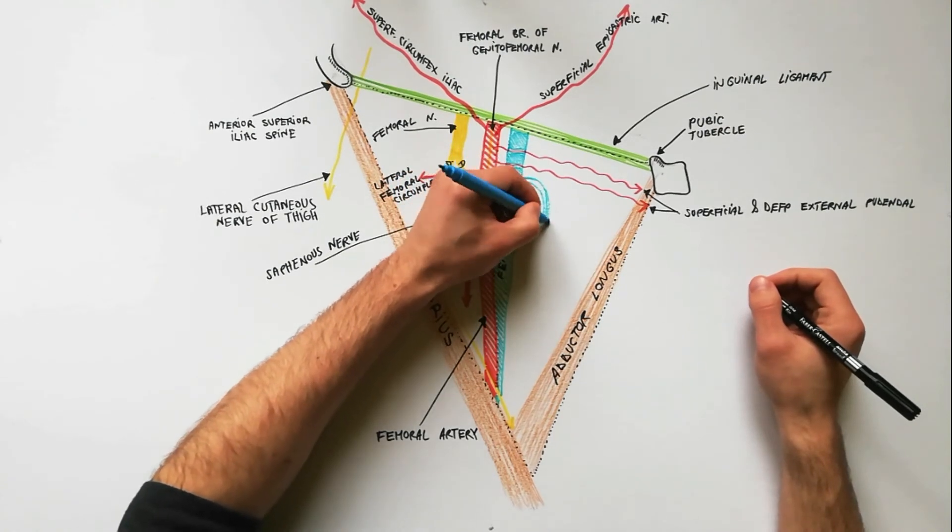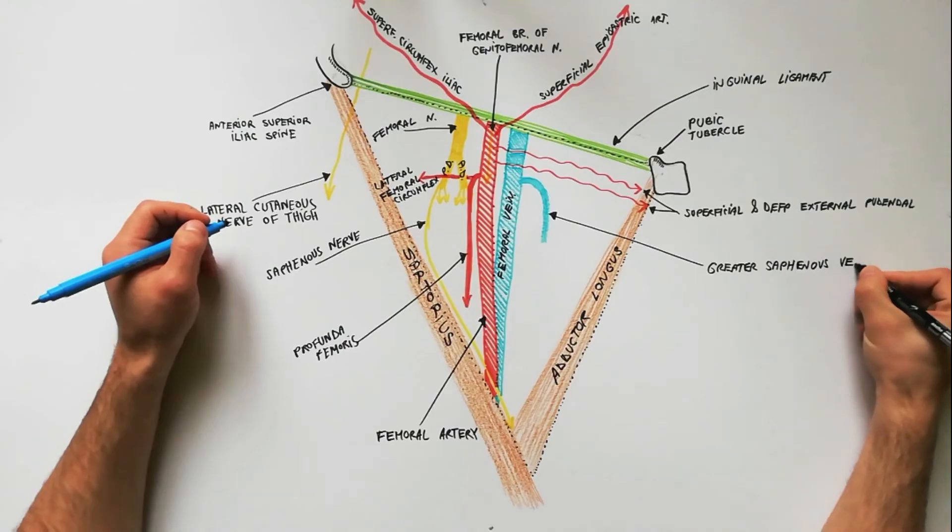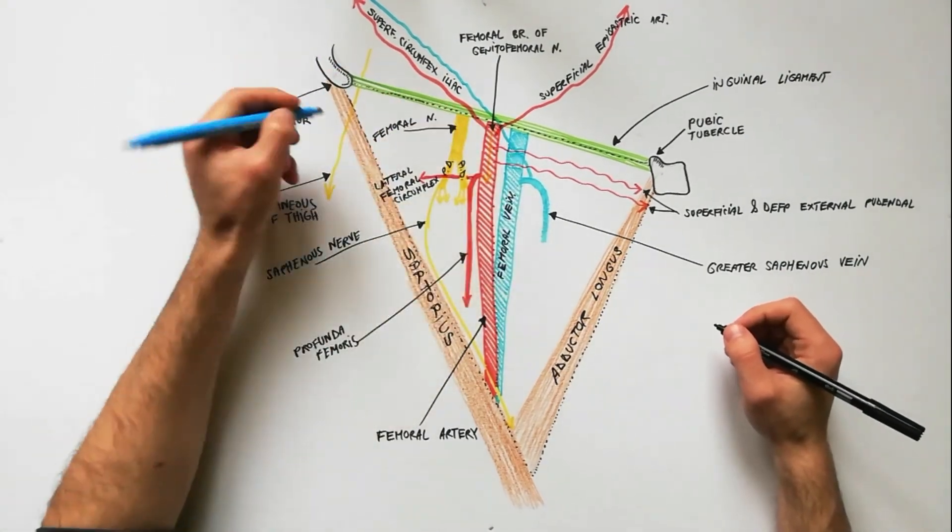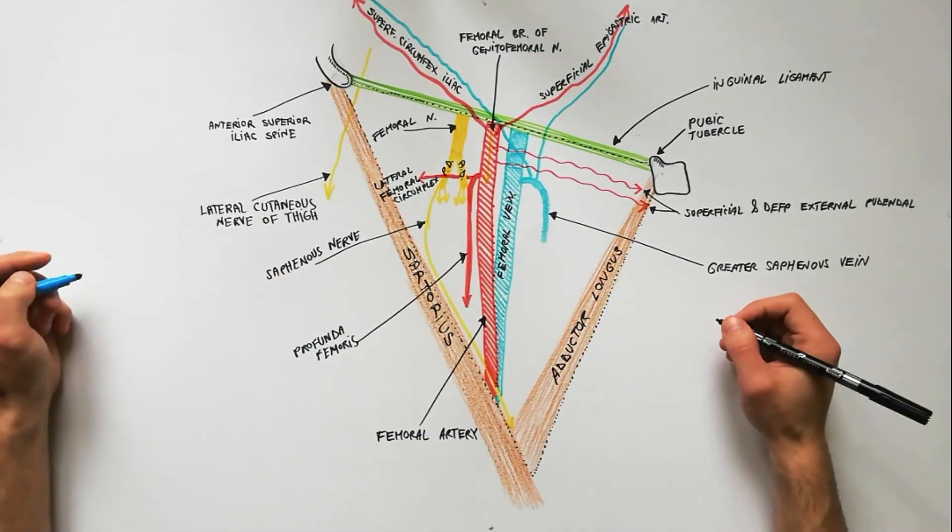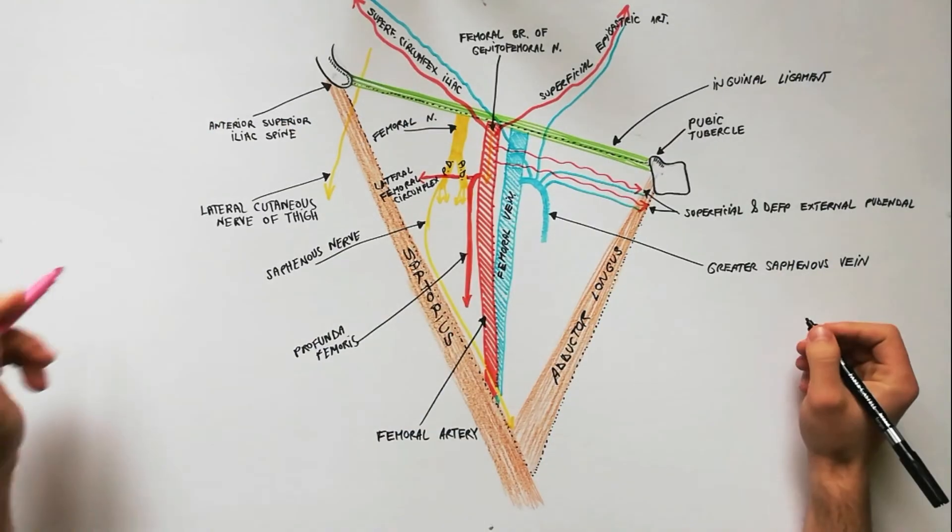It receives drainage from the great saphenous vein, which in turn receives drainage from the superficial circumflex iliac vein, superficial epigastric vein, and superficial and deep external pudendal veins.